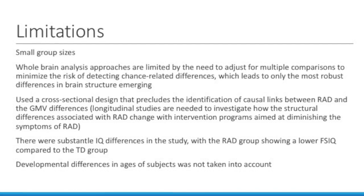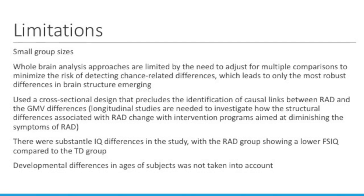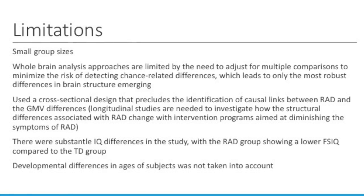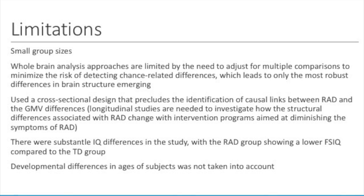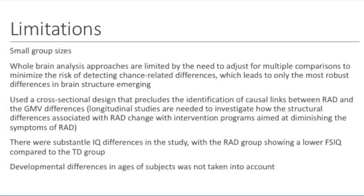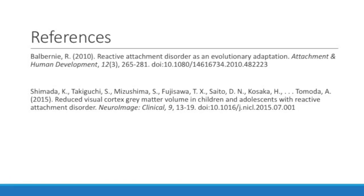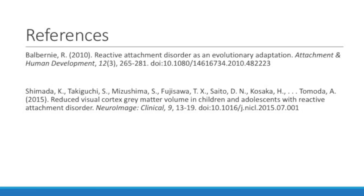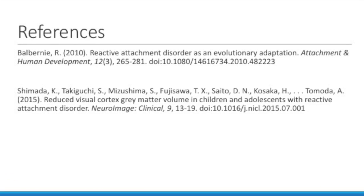There were also substantial IQ differences in the study, with the RAD group showing a lower overall full-scale IQ compared to the typically developing group, so that could have caused some differences. There were also developmental differences in the ages — a 17-year-old is not at the same developmental pace as a 10-year-old. And that is it. Any questions, drop them below. Thanks.